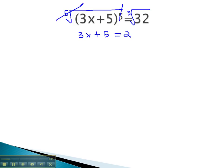To continue solving, we just subtract 5 from both sides to get 3x equals negative 3, and finally divide both sides by 3 to find out that x equals negative 1.